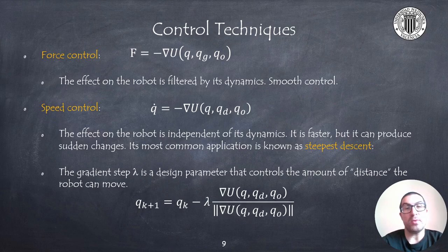In this case, the robot's own dynamics will act as a filter, and this type of control generally is smooth, although it might have certain oscillations if friction is not included in the dynamic model of the robot.